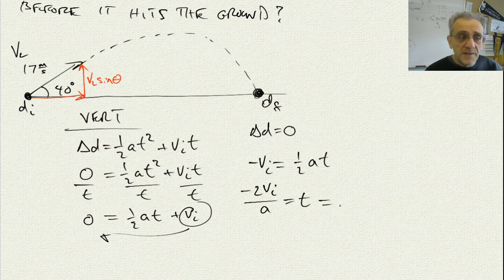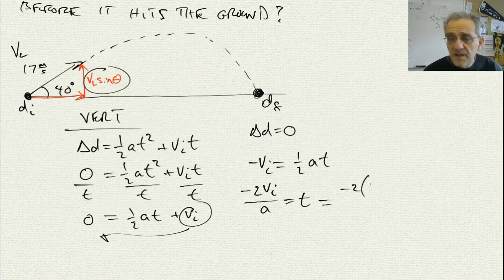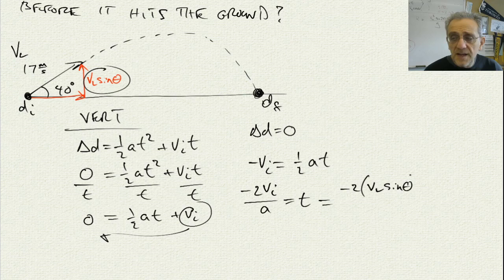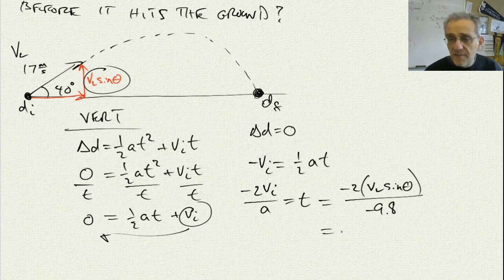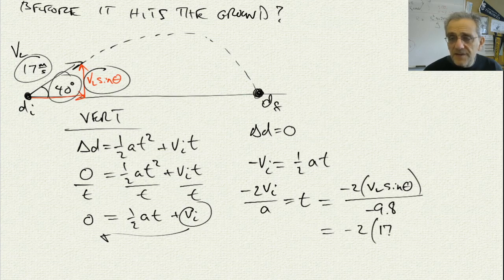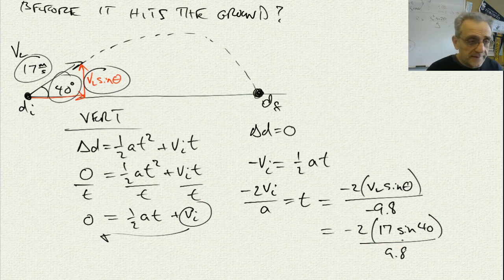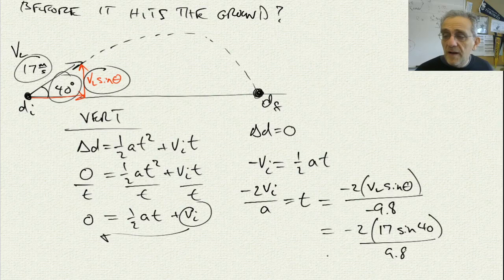Now, I can put my values in. I got negative 2 times my VI, which is right here. That's VL sine theta divided by A, which is negative 9.8. And so, if I put in my values for VL and theta, I've got negative 2 times 17 times sine 40 divided by 9.8. And when I do that, I get the answer of 2.23 seconds.